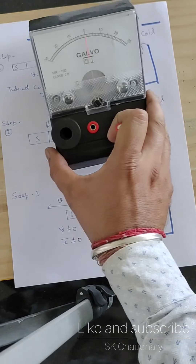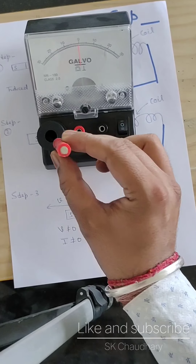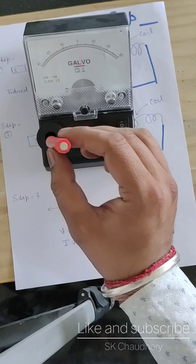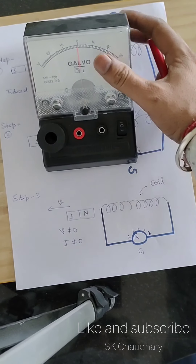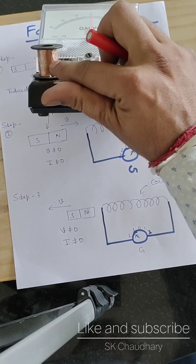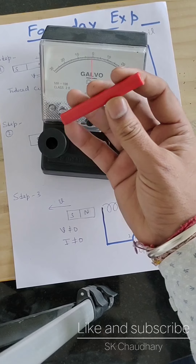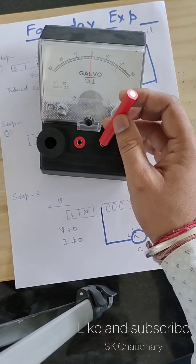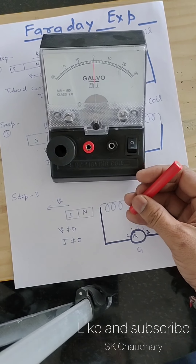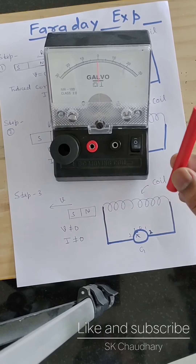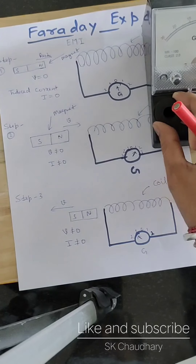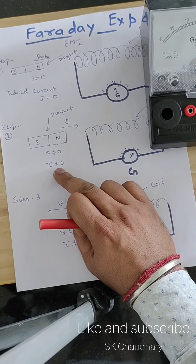In this activity, we can see that when I move the magnet, the deflection appears here. This means that inside the coil, there is an induced current due to the motion of the magnet. Either you can move the coil or you can move the magnet, but there must be a relative motion between the magnet and the coil. If relative motion is present, there will be an induced current.